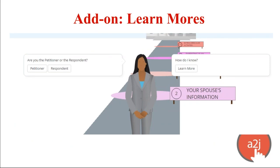Another add-on that's pretty unique to A2J is a learn more — a way to give additional information to your end user. Usually the end user avatar is standing next to the guide, and the 'how do I know?' question on the right would be the learn more. If the user has that question — like how do I know who's a dependent, or how many people are included in a household, or who's the petitioner — they can click the learn more button and the additional resources you as the author have provided (text, graphic, or video) will display.